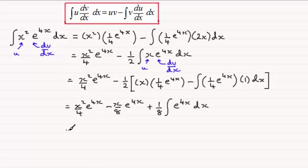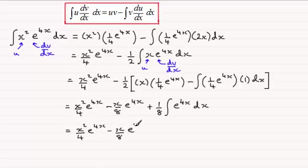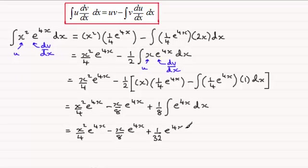Now all I need to do is work out that final integral. We get minus x over 8 times e to the power 4x. Integrating e to the power 4x gives a quarter e to the 4x; multiplied by 1/8 gives plus 1 over 32 times e to the power 4x. And don't forget the constant of integration, plus c.